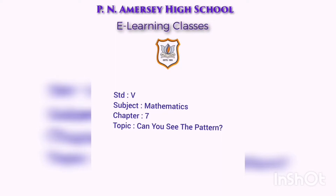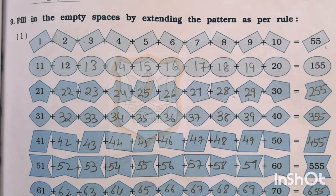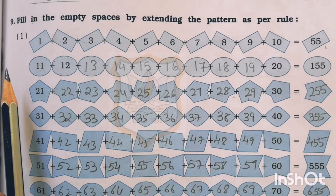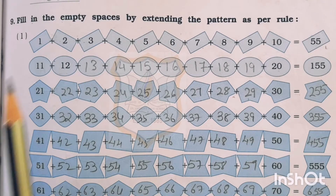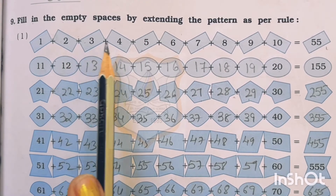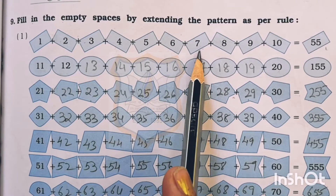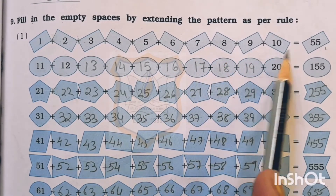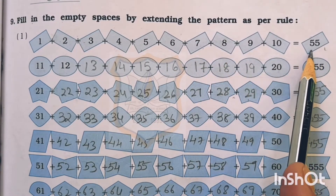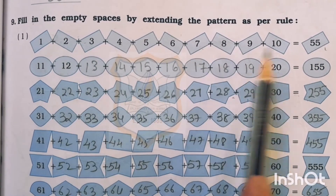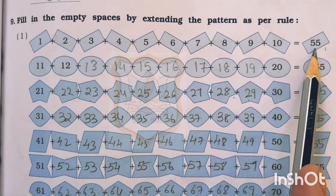Can you see the pattern? Question number 9: fill in the empty space by extending the pattern as per rule. First part of question number 9: here 1 plus 2 plus 3 plus 4 plus 5 plus 6 plus 7 plus 8 plus 9 plus 10 is equal to 55. If we add all these numbers, we will get the answer 55.